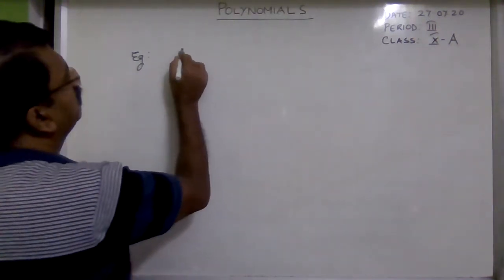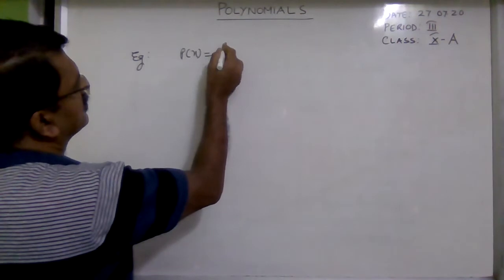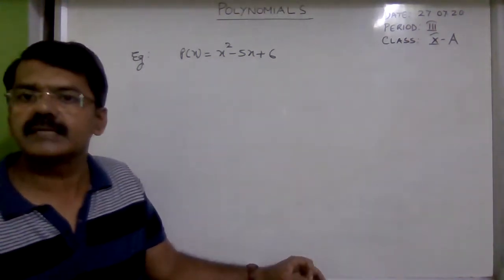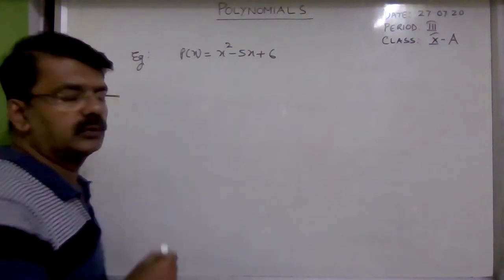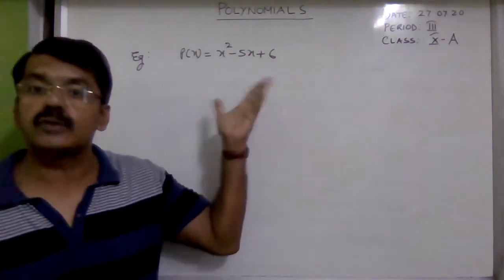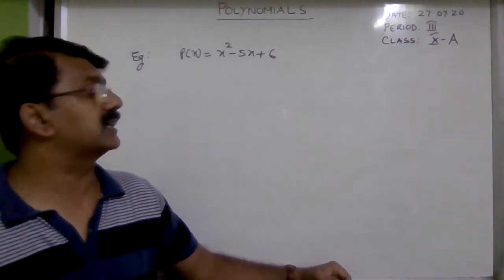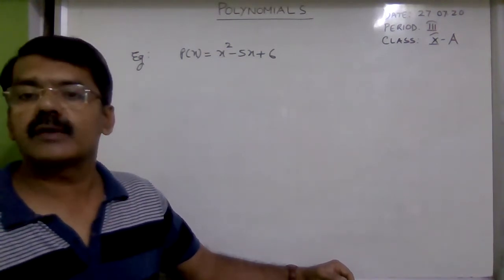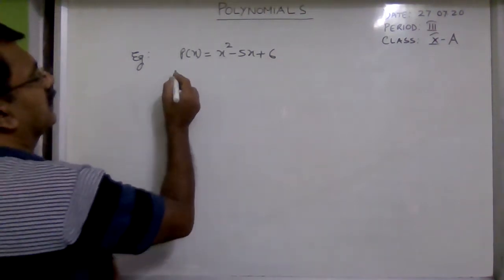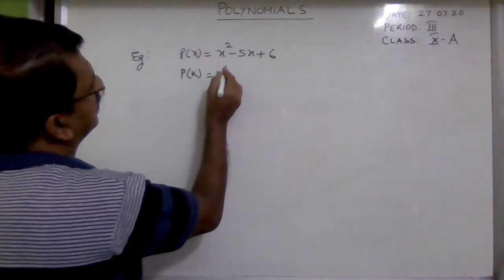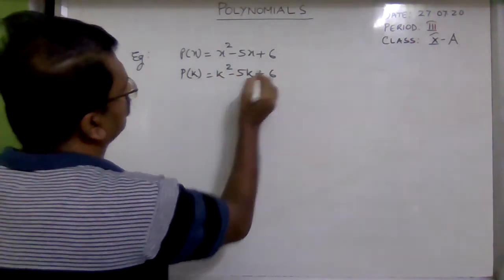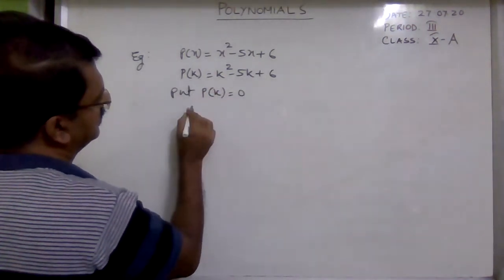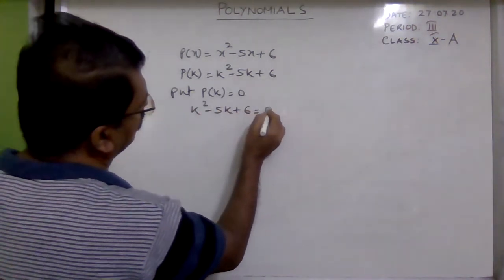Now suppose there is a polynomial p(x) = x² − 5x + 6. The highest power of x here is 2, so it is a quadratic polynomial, and I just told you that in a quadratic polynomial the number of zeros will be 2. If you find p(k), that will be k² − 5k + 6. Put p(k) equal to 0: k² − 5k + 6 = 0.